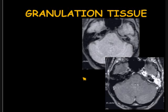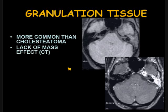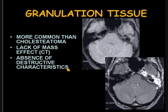Continuing with our discussion of lesions associated with chronic otitis, next to discuss is granulation tissue. Granulation tissue is much more common than cholesteatoma. They are characterized on CT by lack of mass effect and absence of destructive characteristics.